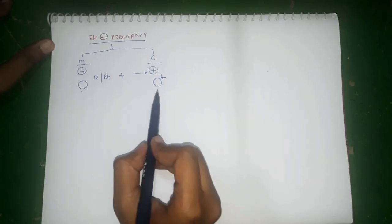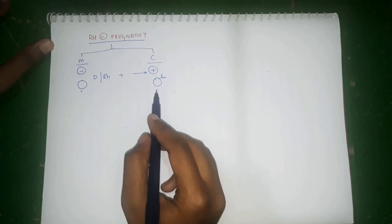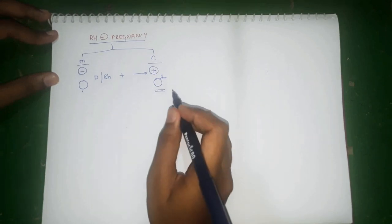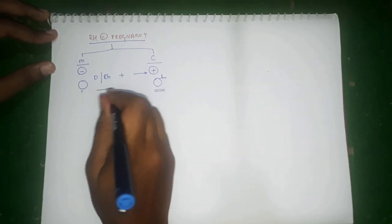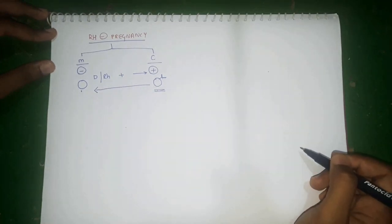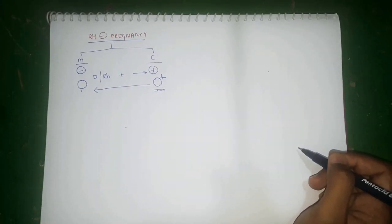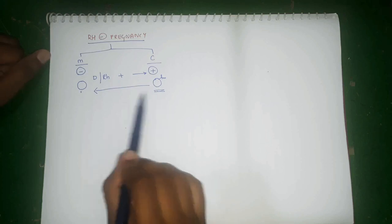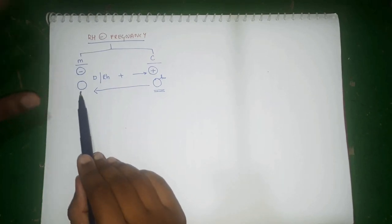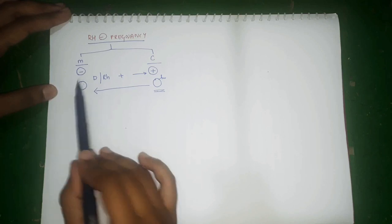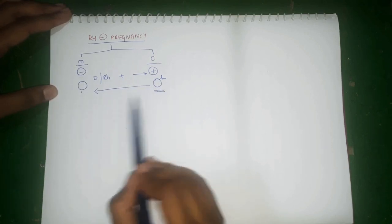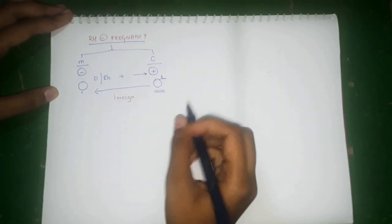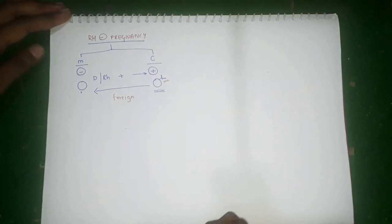So the mother is Rh-negative and the child is Rh-positive. During a pregnancy, due to some circumstances, if the Rh-positive RBCs of the child enter the maternal circulation, normally there is no mixing of fetal blood and maternal blood. But under certain circumstances, if these fetal RBCs enter the maternal circulation, because the mother's RBCs do not have the rhesus antigen, this will act as a foreign body — a foreign antigen.